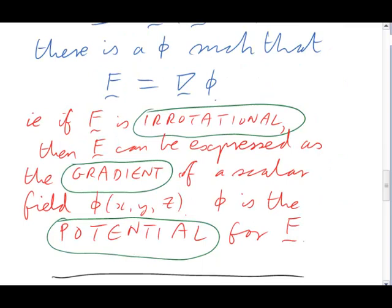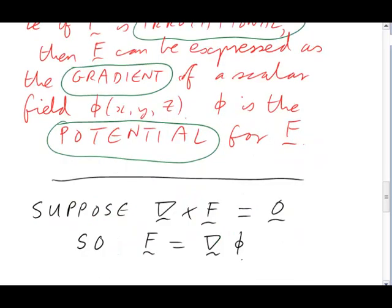The scalar field phi is called the potential for F. For the remainder of this recording, I want to explore some of the consequences, or in fact one important consequence, of F having a potential. So, let's start with a field F, which is irrotational, and suppose that it has a potential phi. That gives us the equations curl F equals zero and F equals grad phi.